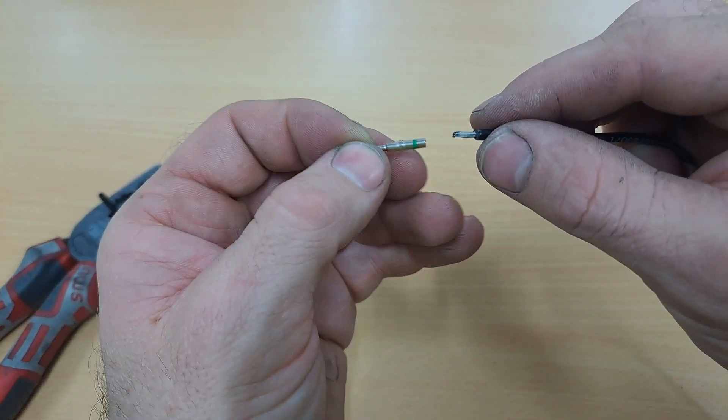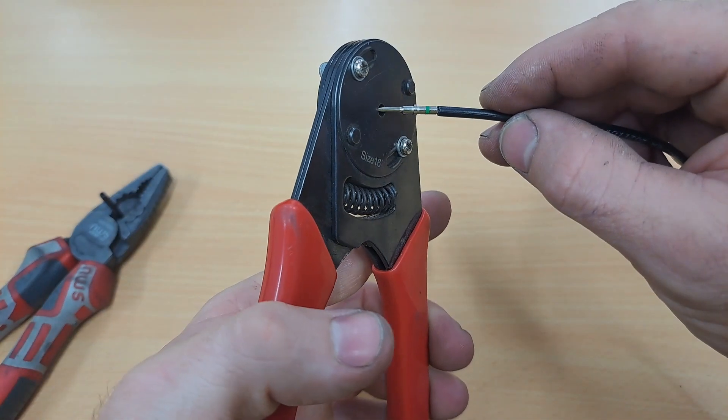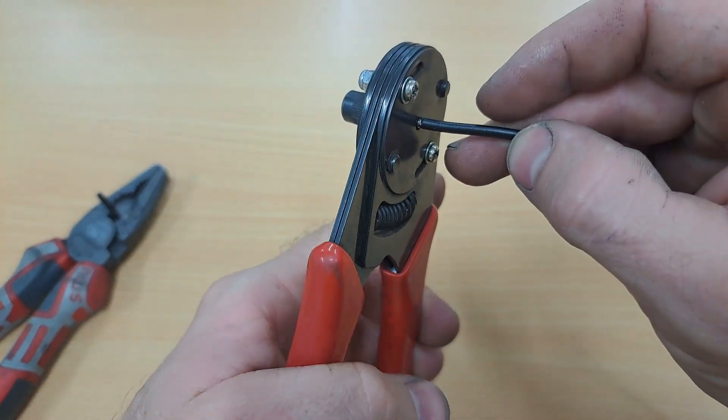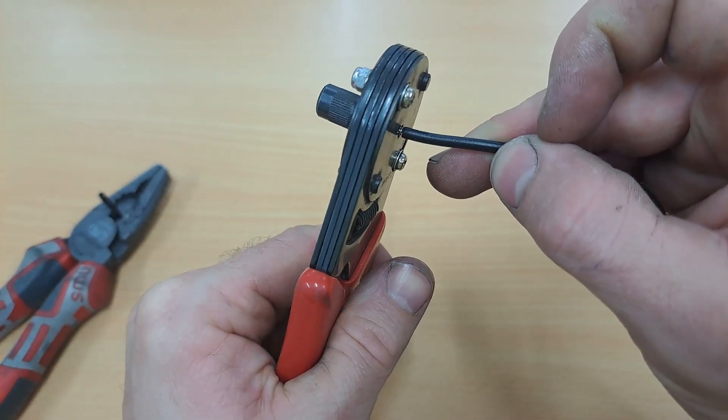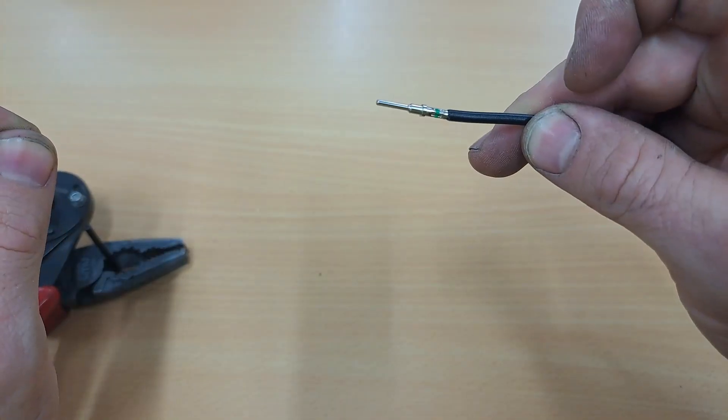Thread the cable into the male pin. Now we are going to get our crimper and crimp the male end. Make sure it goes all the way in again and crimp. Give it the test pull and move on to the red cable.